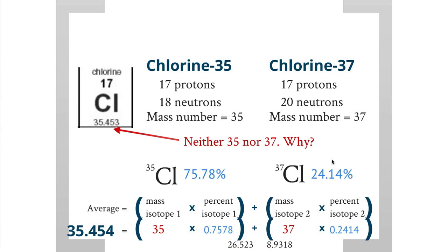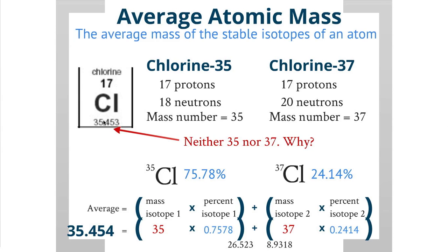Which is basically this number right here. And that's how you calculate the average atomic mass. The average atomic mass is the average mass of the stable isotopes of an atom. So we have some chlorine-35, we have some chlorine-37. When we get the average, we get 35.45.